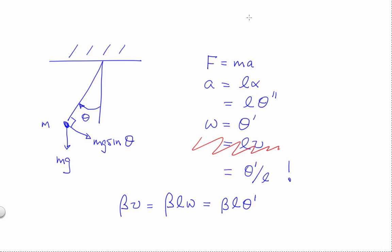And now we really are ready to write the equation. What I'm going to do now is write F equals MA at the bob. And on the left-hand side is the MA, and here's the resultant force from the force of gravity and the friction.